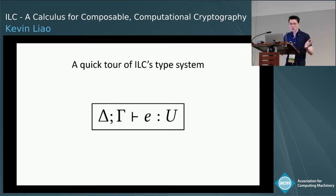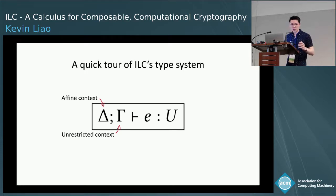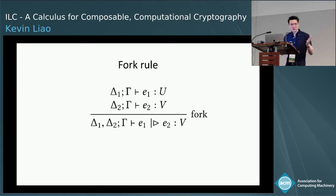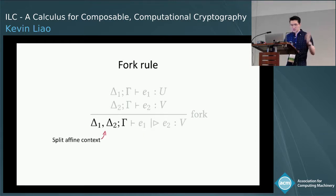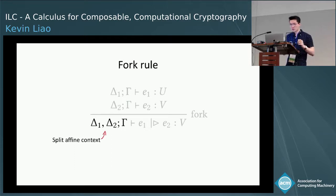Now I'll give a quick tour of ILC's type system. The main typing judgment reads: under affine context Delta and unrestricted context Gamma, the expression E has type U. In the fork rule, the expression forks a child process E1 and continues as E2. As standard in affine type systems, we split the affine resources among the two processes — read channels and the write token can go in E1 or E2, but not both.